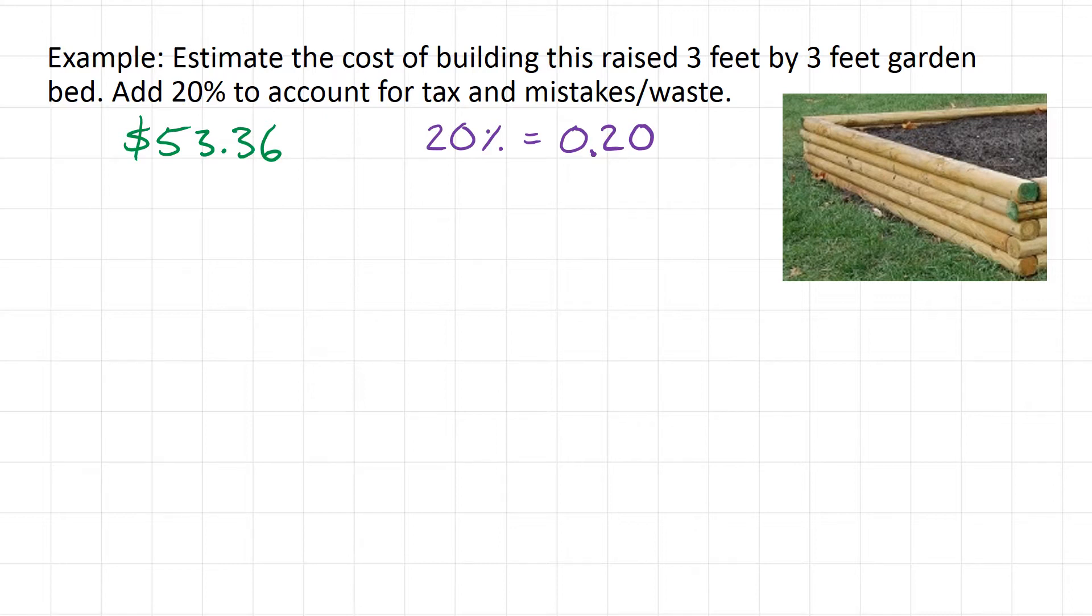We do that with multiplication. So we do 0.20 times 53.36.